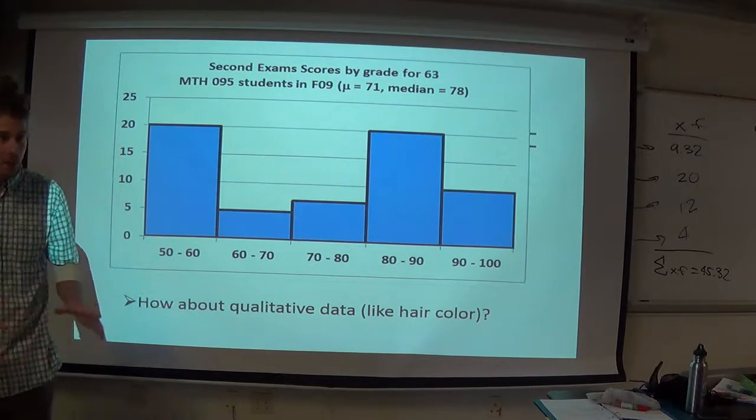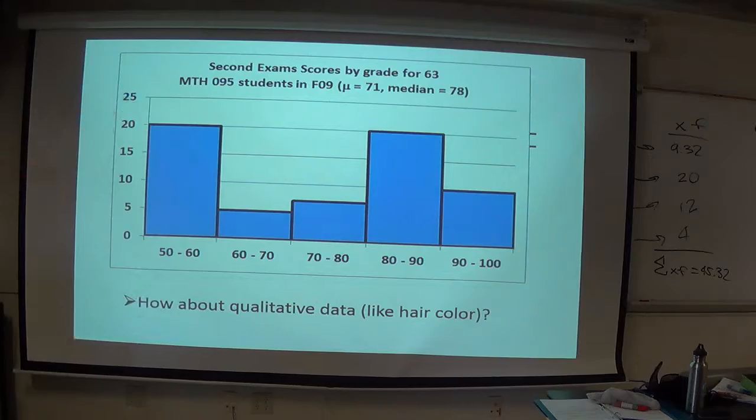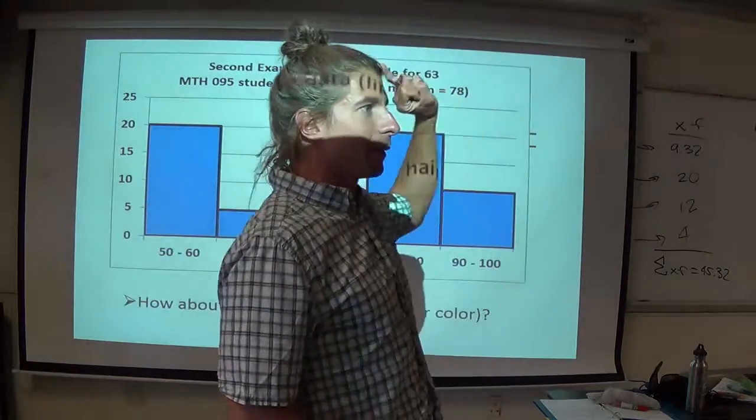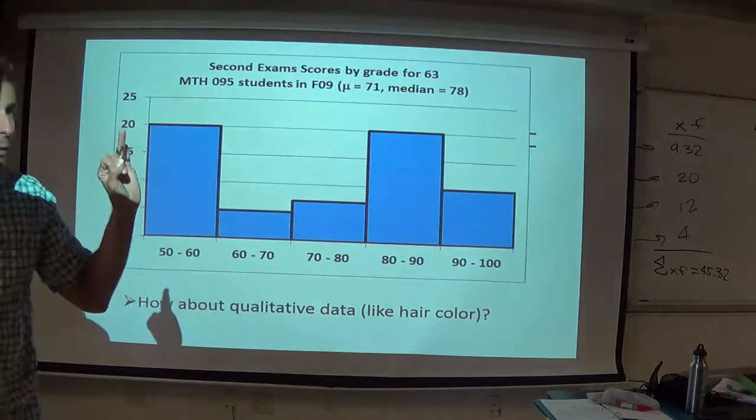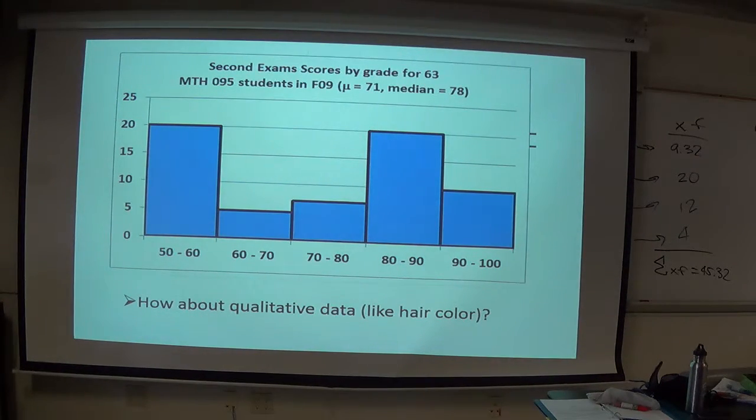So for qualitative data, you can break the number line, because there's no number line. It's a verbal axis. So you can't talk about averages, because averages are numerical. They're out. Can't talk about medians, because the medians are numerical by position. The only thing you can talk about is mode, that's it.